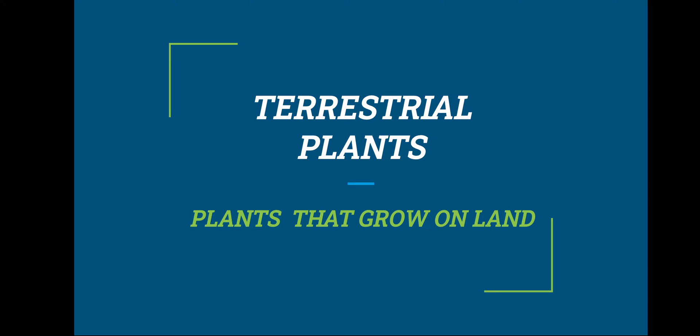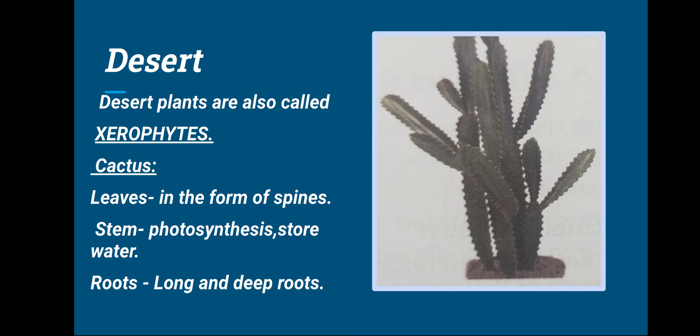Desert plants are also called xerophytes. They are adapted to grow in hot and dry conditions. There is scarcity of water also. For example, let us know about the cactus. The leaves of cactus plants are in the form of spines.